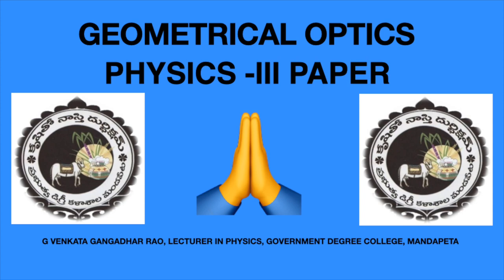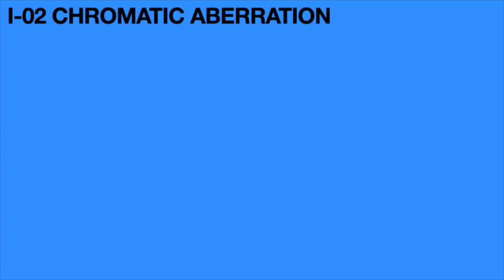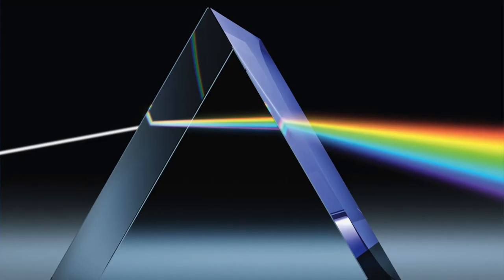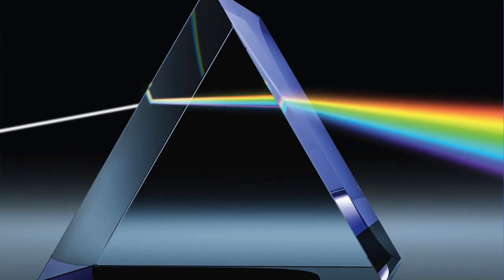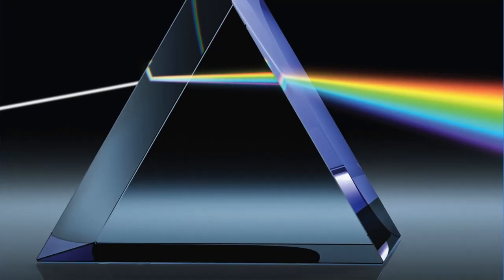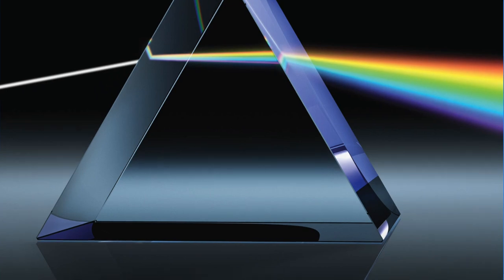Hello everyone, let's move on to the second topic on this unit, that is chromatic aberration. In order to explain chromatic aberration, we need to understand the dispersion of the prism.